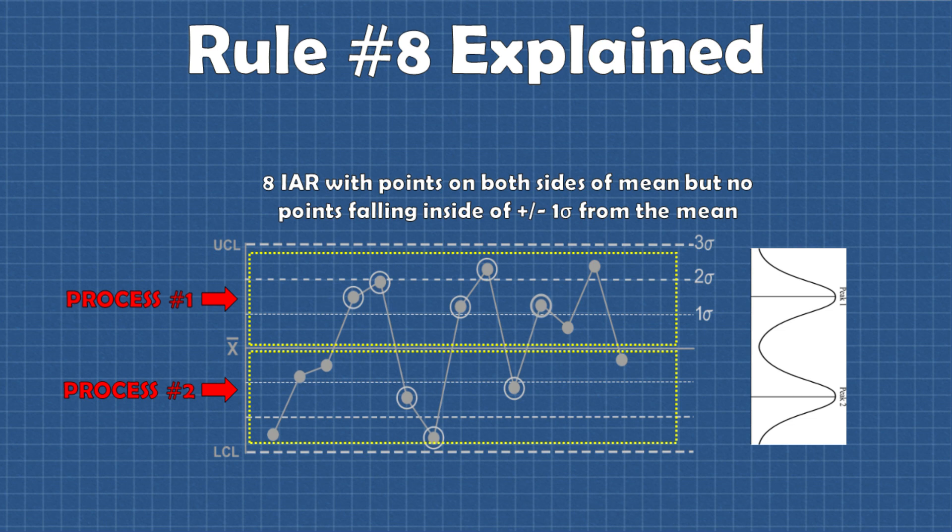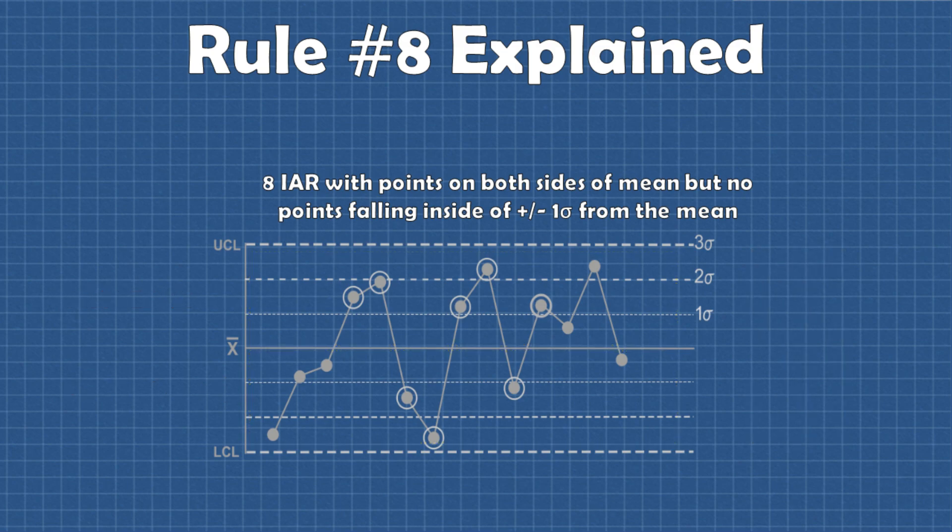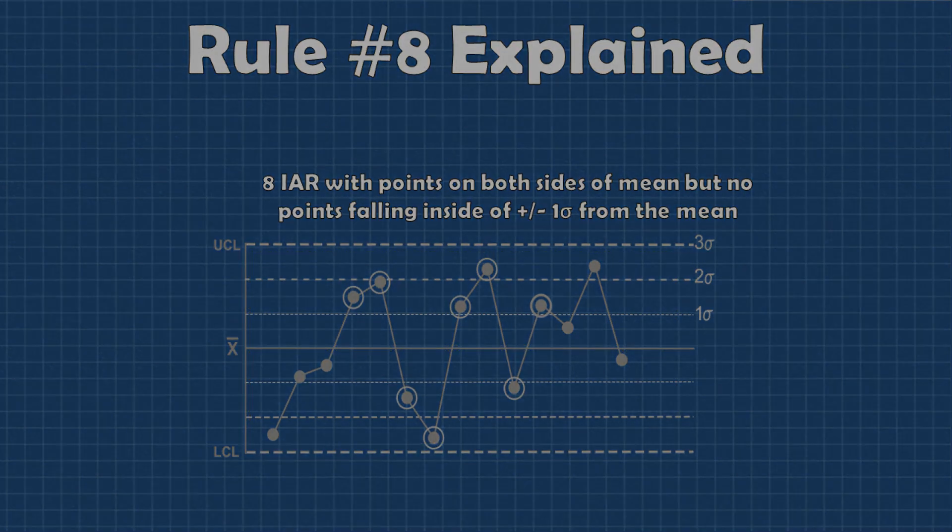These phenomena will usually result in a bimodal distribution of the data used in the control chart. That's why you should always look at the distribution of the data before control charting a process. You should look at both the individual values and the subgrouped values and again this is a rule that should only be employed when setting up your control chart.